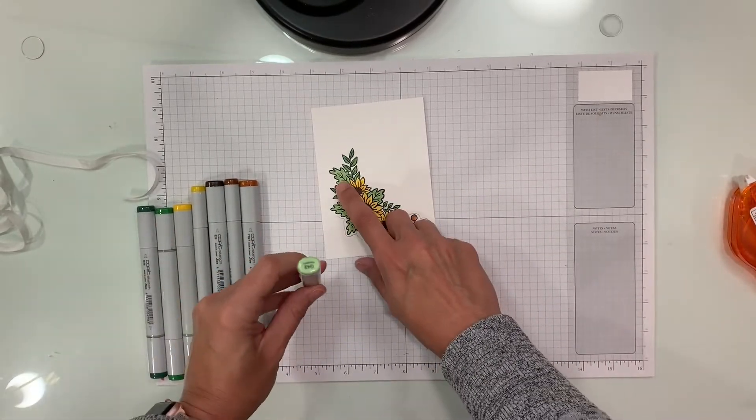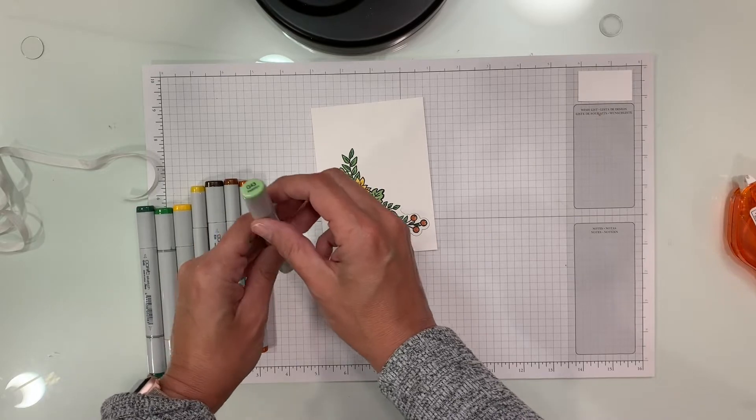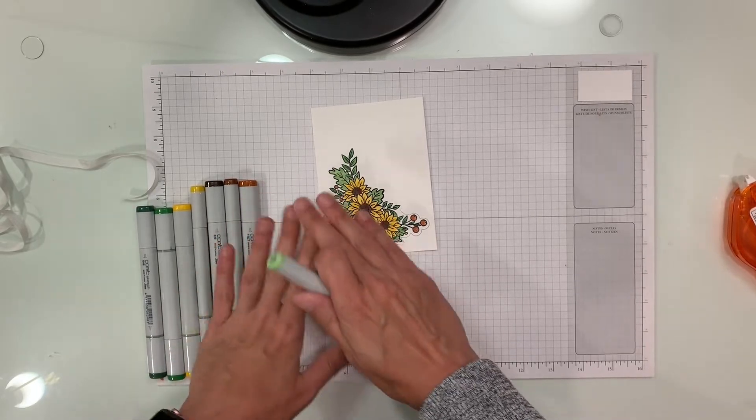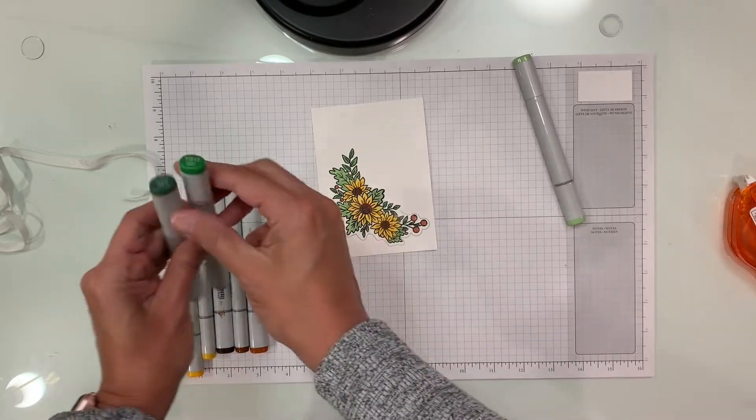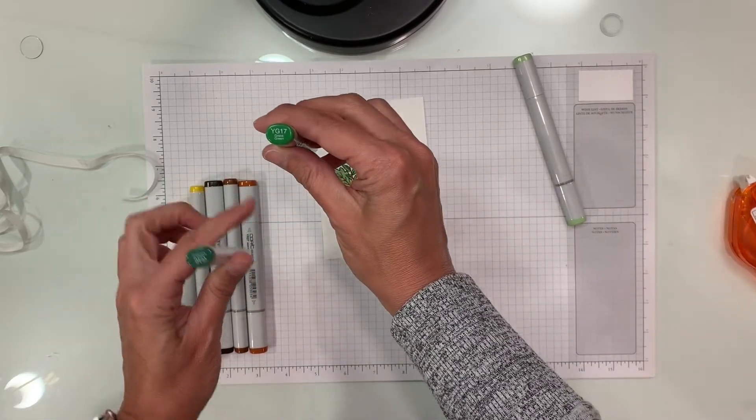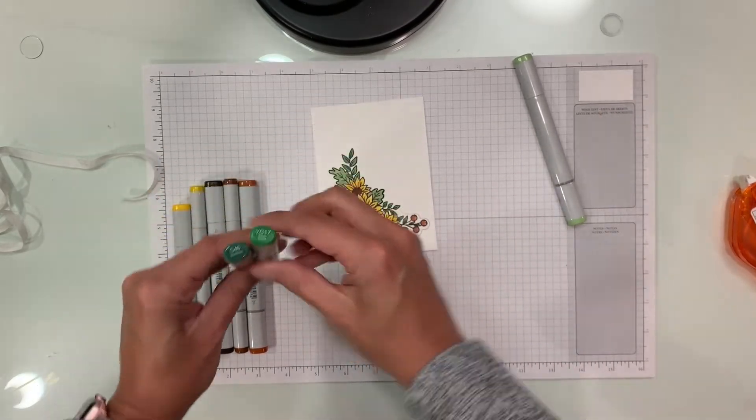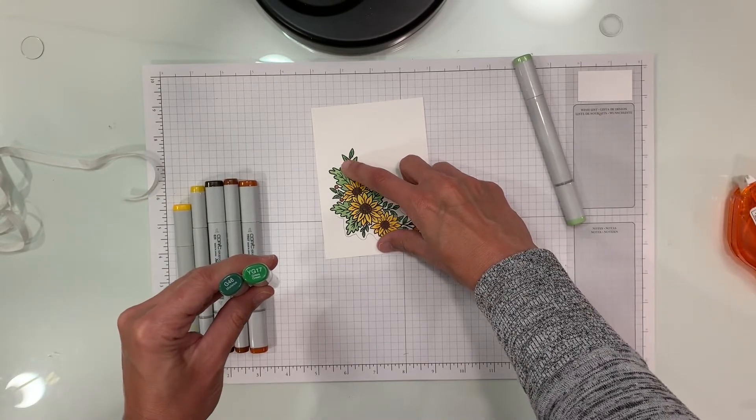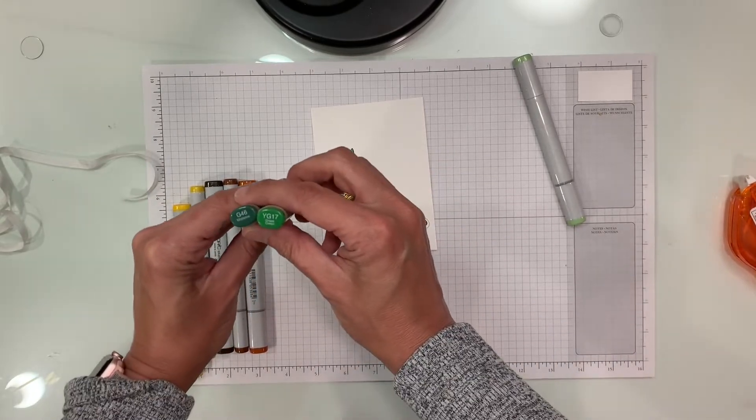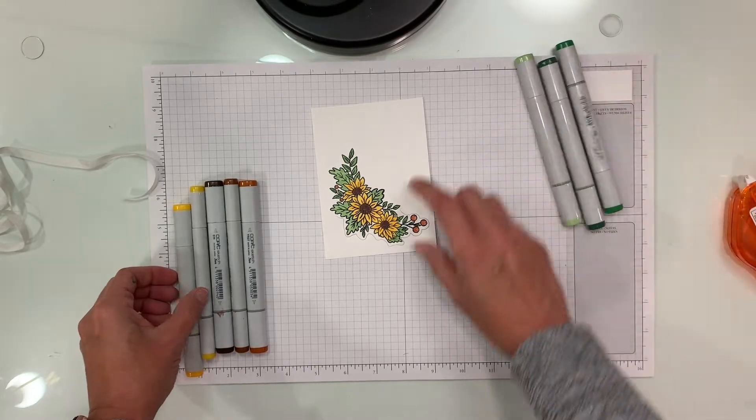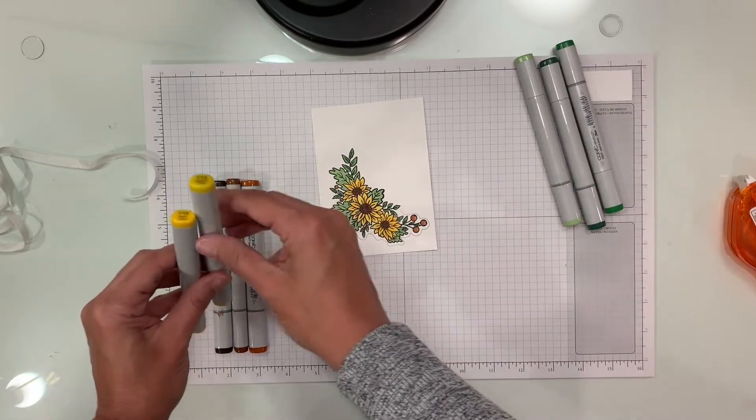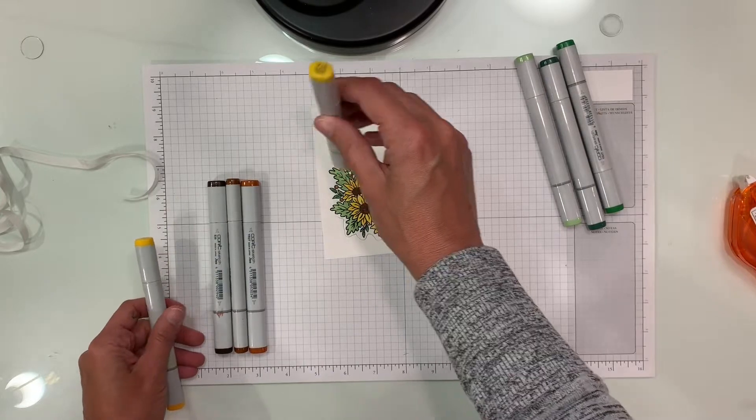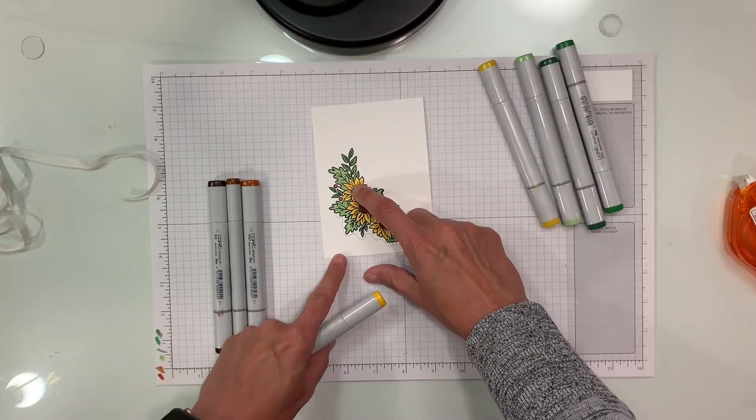So we're going to go over the colors real quick. For these lighter green leaves, I colored them with G43 Pistachio and that's it. For these little baby leaves, I colored them in Grass Green and highlighted the inside of the leaf where the line is with Mistletoe G46.